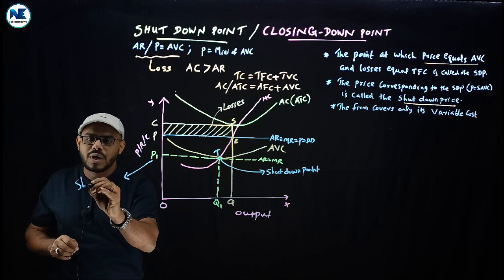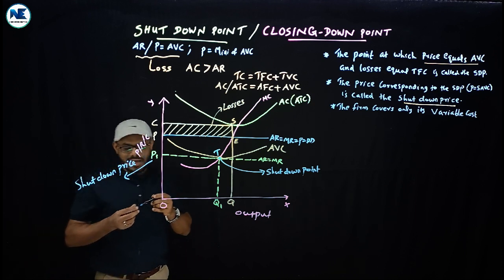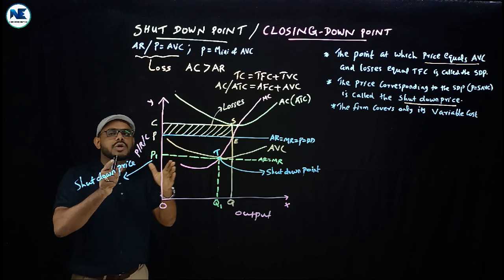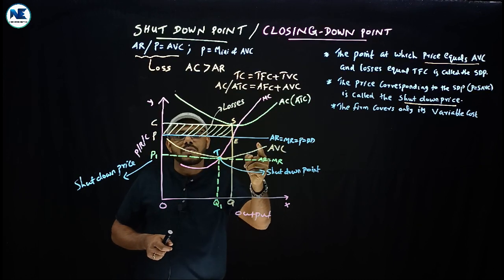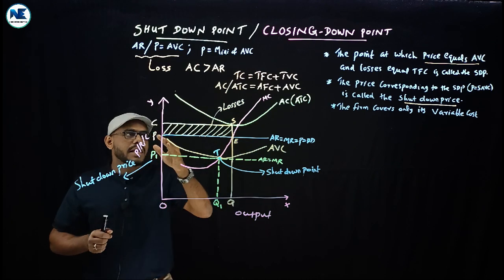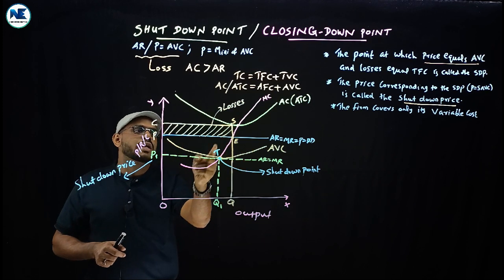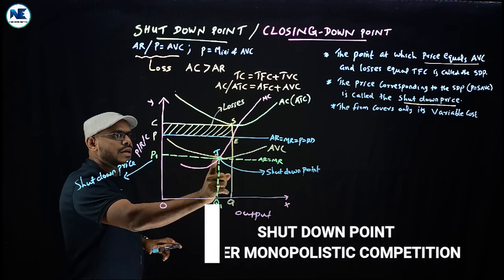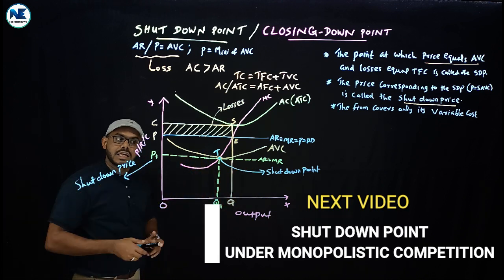P1 is called the shutdown price or closing down price. To summarize: above average cost we have normal profit; below average cost but above average variable cost is the loss zone; at the minimum of average variable cost is the shutdown point; and the corresponding price is the shutdown price.